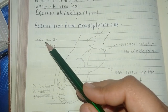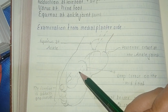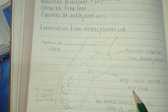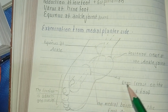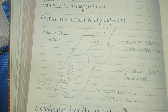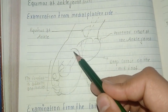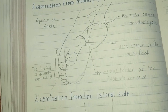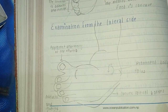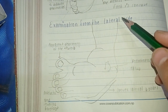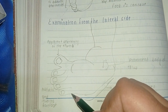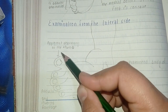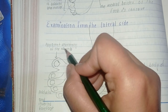Examining from the medial plantar side, we can see equinus at the ankle, posterior crease at the ankle joint, deep crease on the mid foot, and the medial border of the foot is concave, with the forefoot adducted and inverted. From the lateral side, there is a convex lateral border, adducted and inverted forefoot, and apparent shortening of the toes.